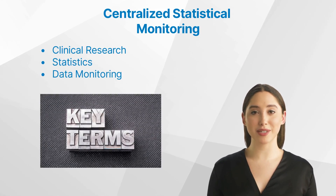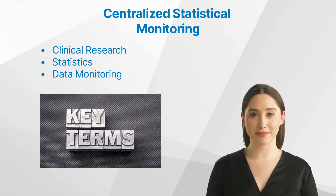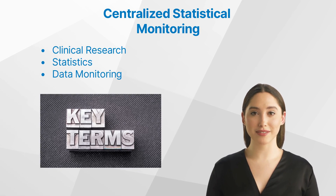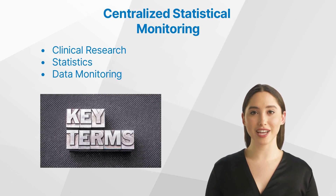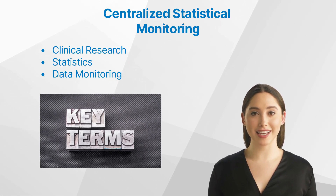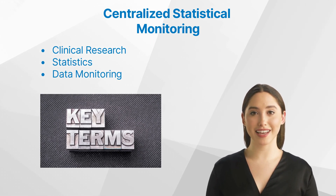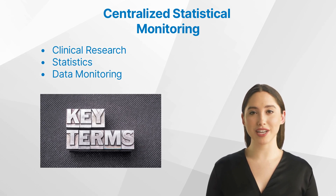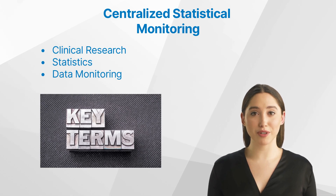Before we dive deeper, let's define some key terms. First, clinical research refers to the study of health and illness in people — it is the way we learn how to prevent, diagnose, and treat illness. Second, statistics involves collecting, analyzing, interpreting, presenting, and organizing data. Third, data monitoring is a process that checks the accuracy and reliability of data in a research study or clinical trial.